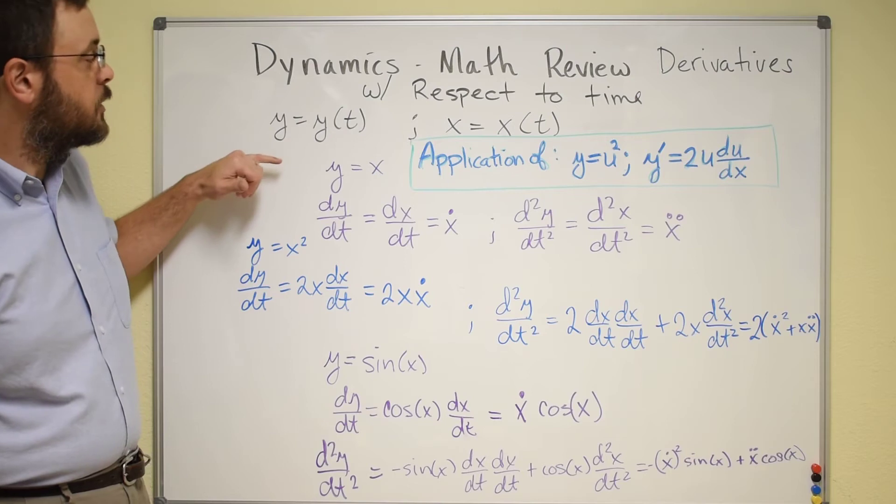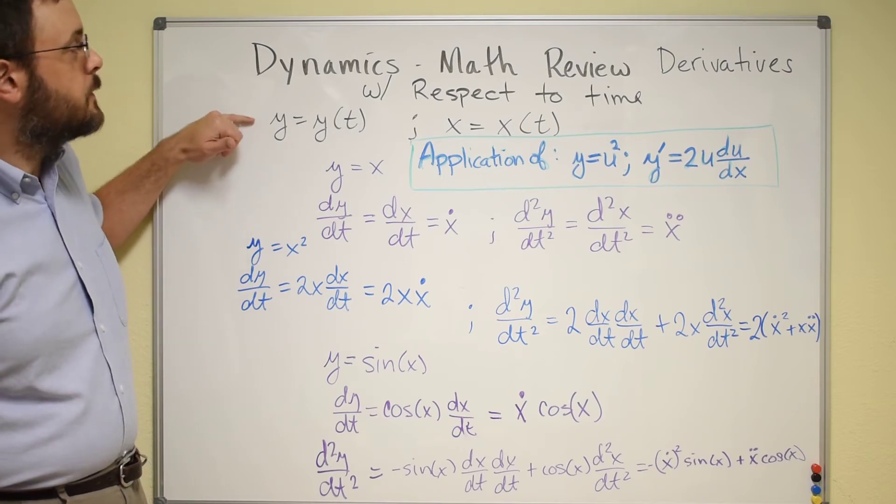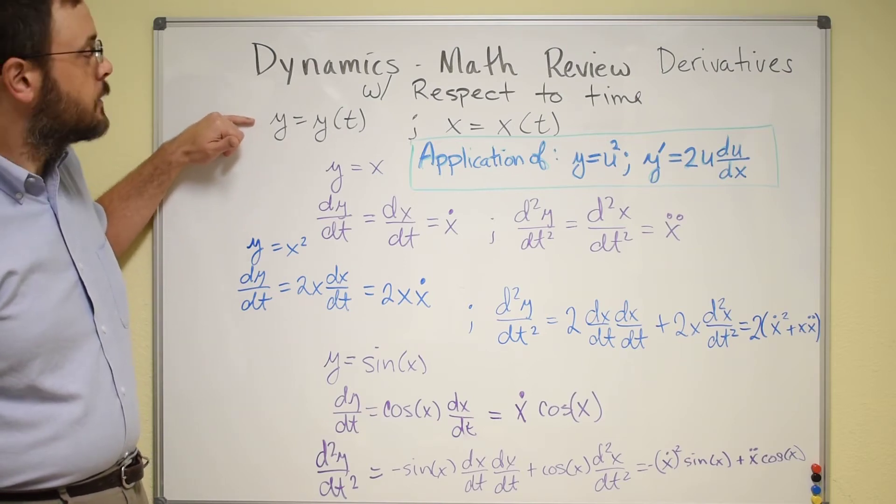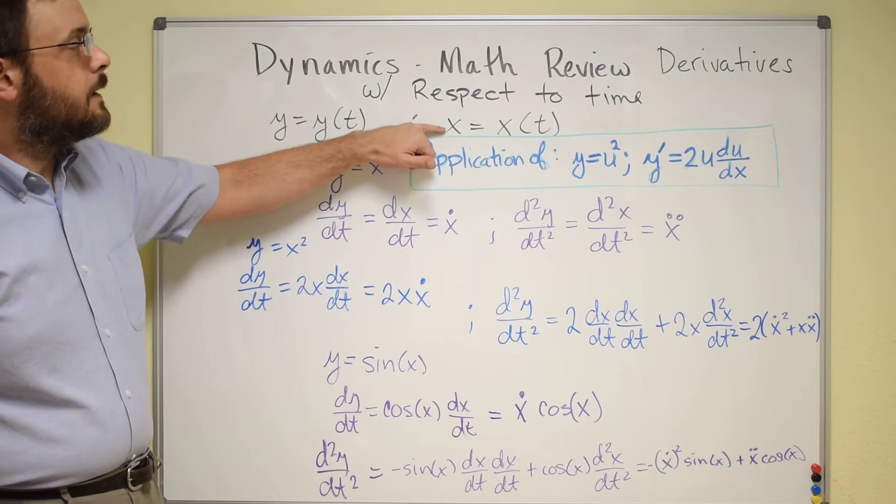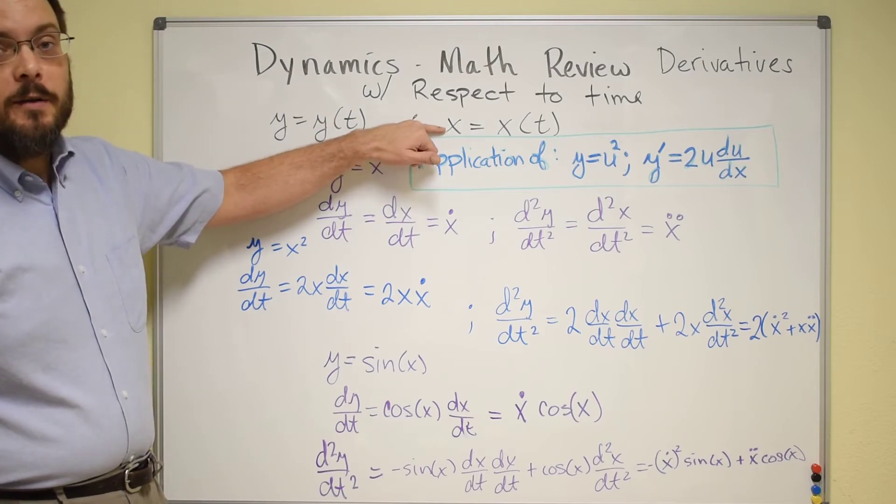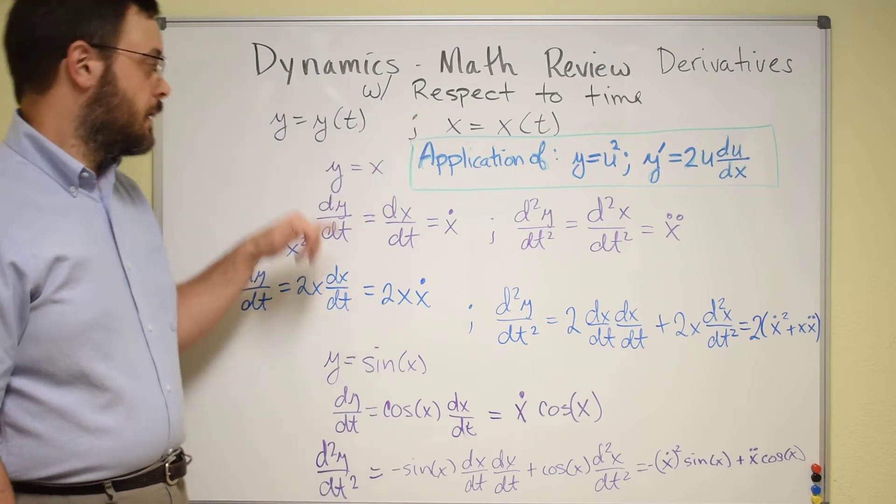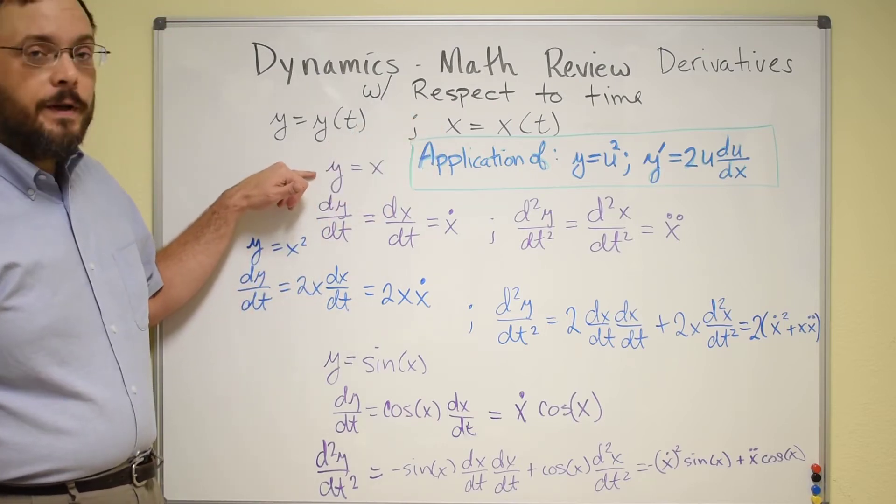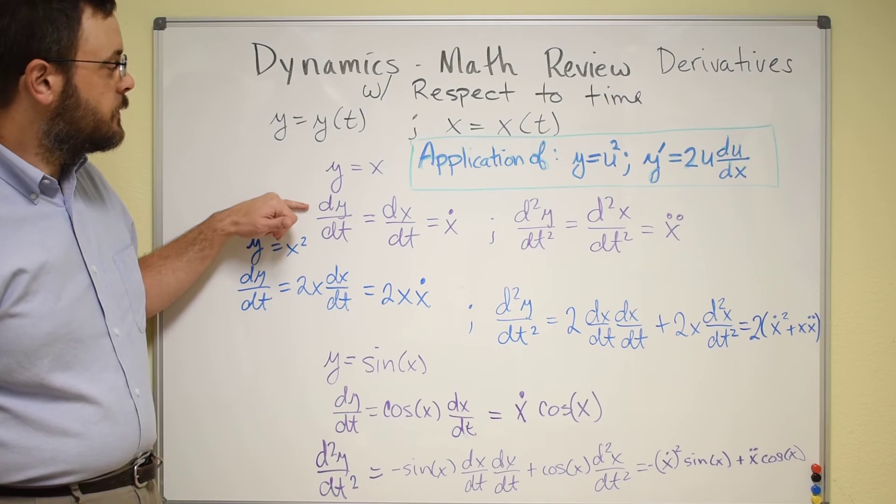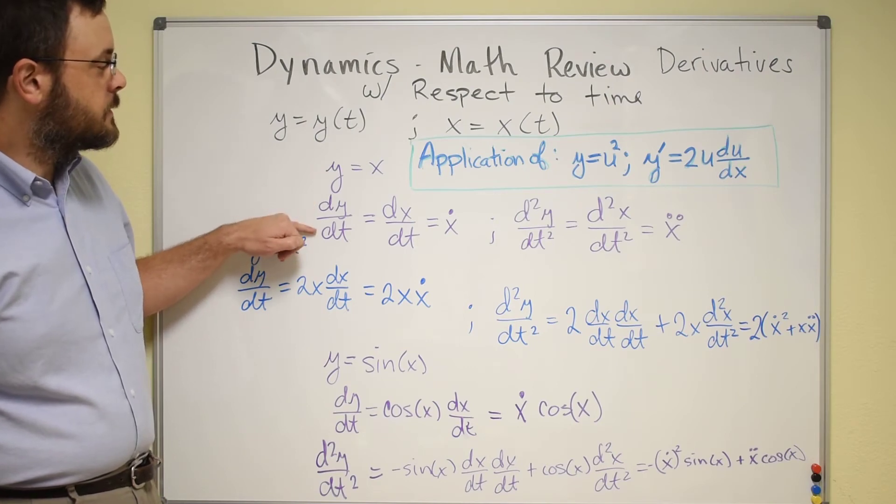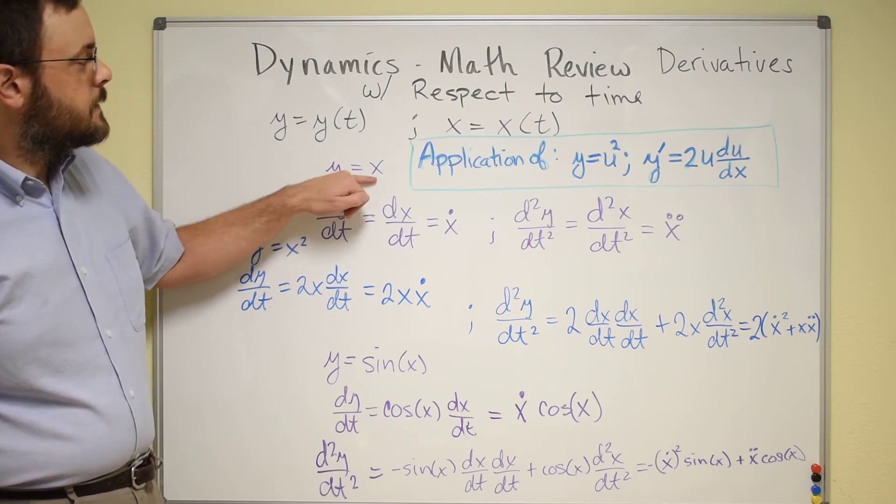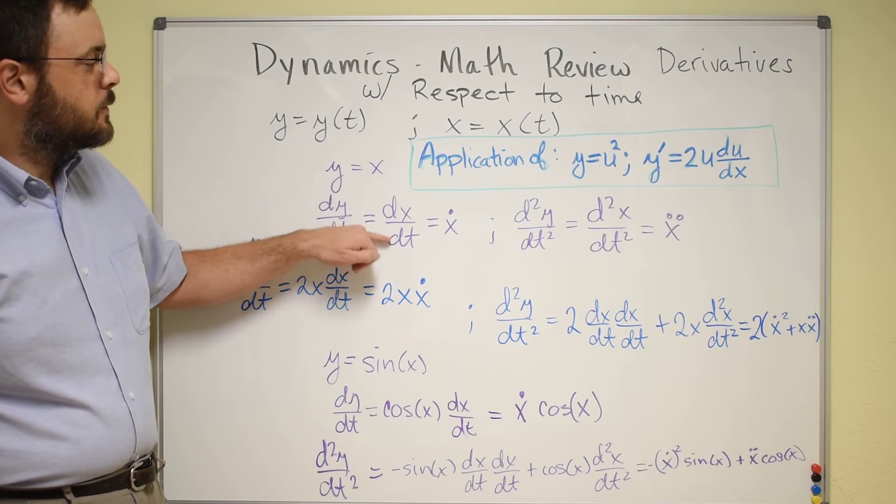So let's look at a couple of functions. In all of these functions y is going to be a function of time and x is going to be a function of time, but y is also going to be a function of x. So we have y equals x and we're going to do our derivative. The derivative of y with respect to time is then just the derivative of x with respect to time.